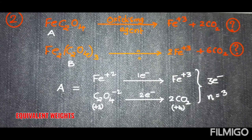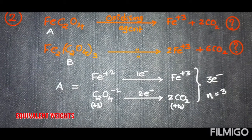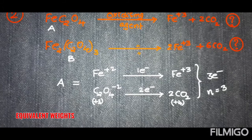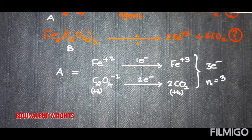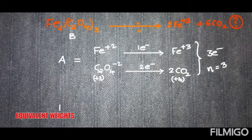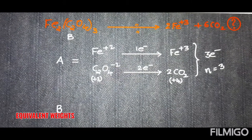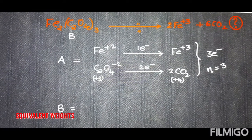So the cationic part releases one electron and the anionic part releases two electrons, meaning this molecule releases three electrons total. Therefore the n-factor for molecule A (ferrous oxalate) is three.